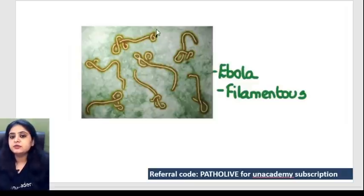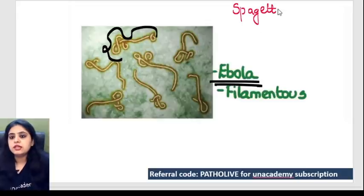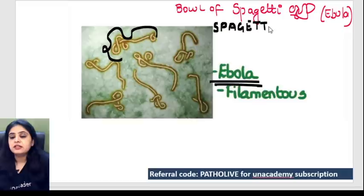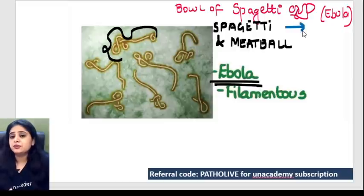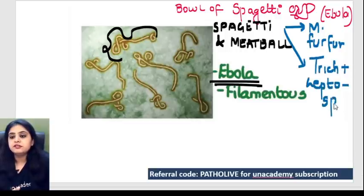Next, the virus that looks like a bowl of spaghetti is Ebola virus — filamentous and tangled. However, note the distinction: spaghetti and meatball appearance in fungal organisms is seen with Malassezia furfur; spaghetti and meatball appearance in pap smear is seen with Trichomonas plus Leptospira; a plain bowl of spaghetti is seen with Ebola.